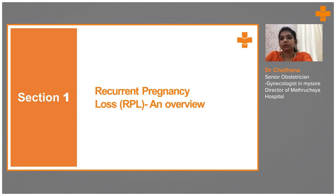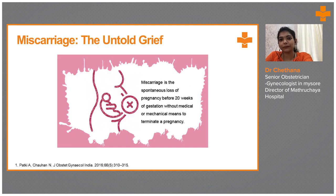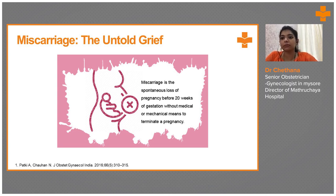So let's go into details about recurrent pregnancy loss. What is miscarriage? Miscarriage is a spontaneous loss of pregnancy before 20 weeks of gestation without any medical or mechanical means to terminate the pregnancy. So this is called as miscarriage.